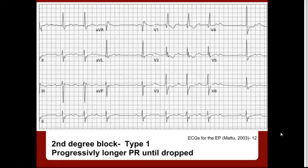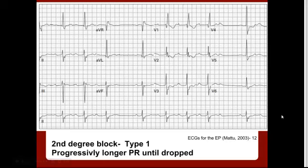In this example of a second degree block Type 1 — from case 12 in Mattu's book — you're going to have that progressively prolonged PR interval until you finally have one dropped. Going along the bottom rhythm strip: P, QRS, P, QRS. Here's the first interval. The second one widens up a little bit, the third one is even wider, and then finally you have a P with no QRS. Then it starts over again, starting smaller and gradually getting wider, until finally you have a P with no following QRS. That would be your second degree block Type 1, or Wenckebach.